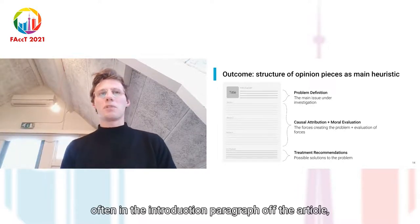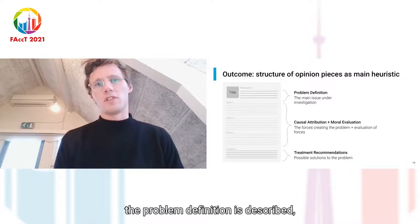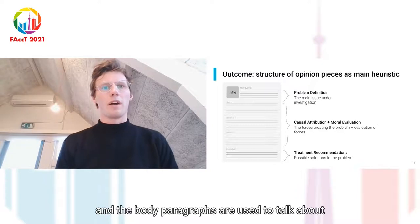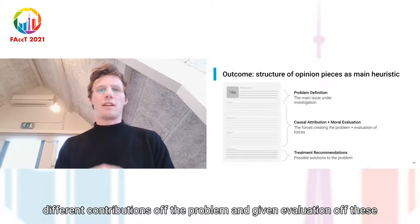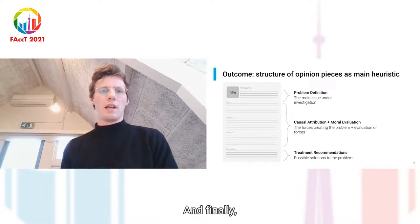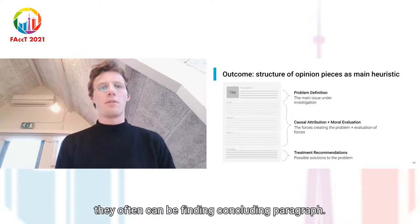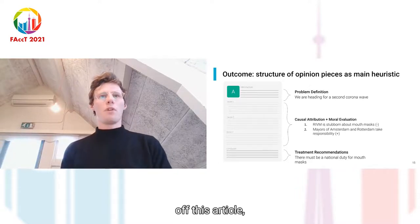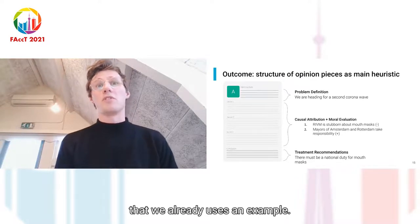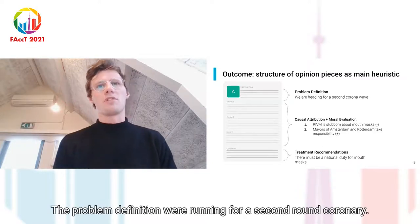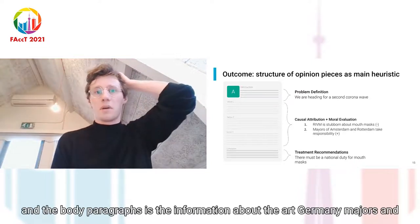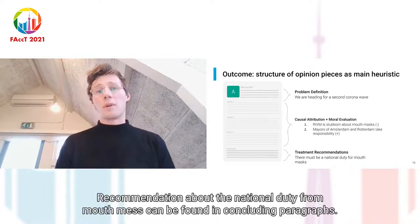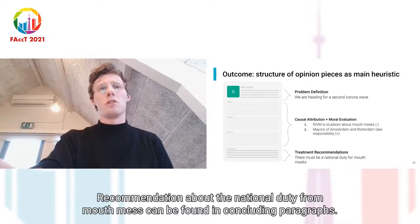Often in the introduction paragraph of the article, the problem definition is described. The body paragraphs are used to talk about different attributions of the problem and give an evaluation of those attributions. And finally, treatment recommendations — if given — can often be found in a concluding paragraph. For example, in the corona wave article: the problem definition is in the introduction, information about the RIVM and the mayors is in the body paragraphs, and the treatment recommendation about a national duty for mouth masks can be found in the concluding paragraphs.